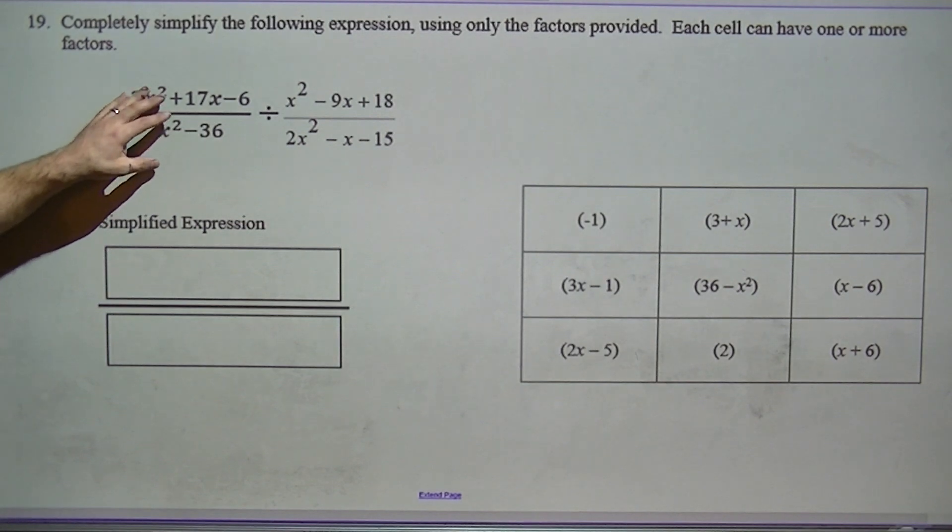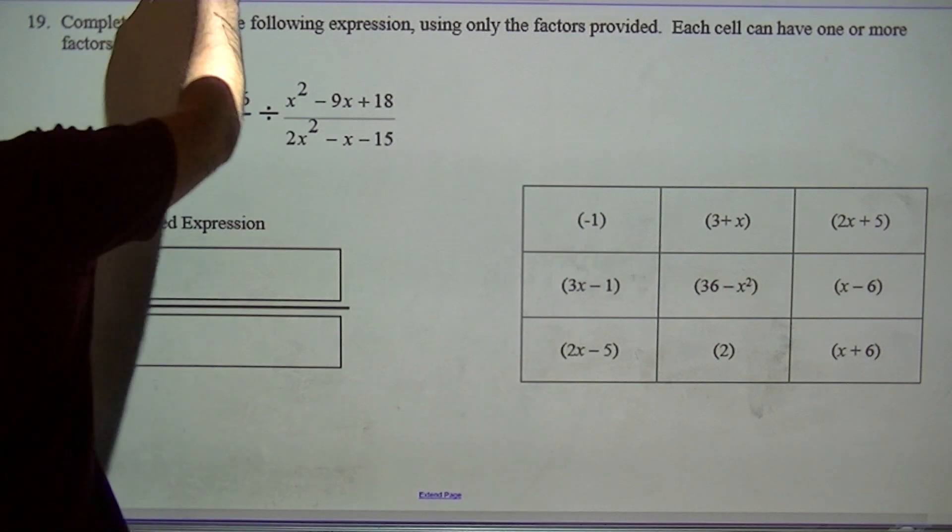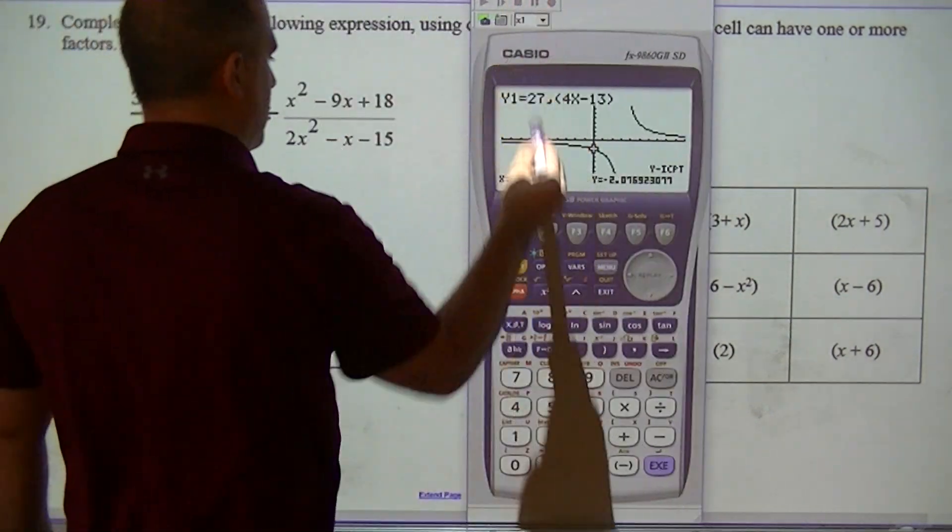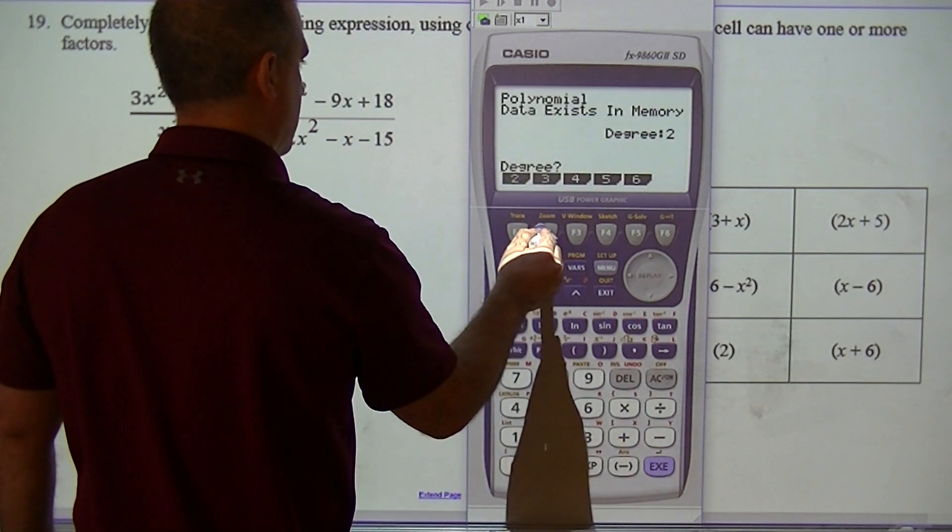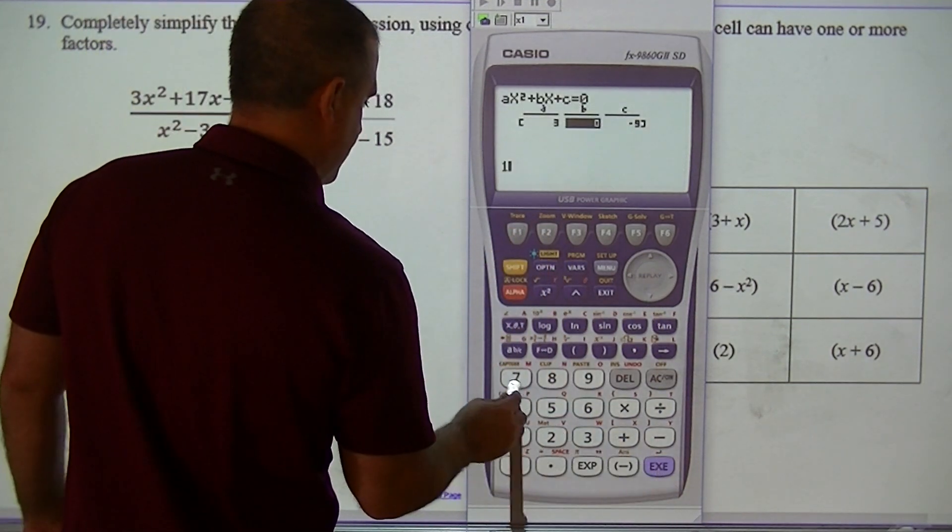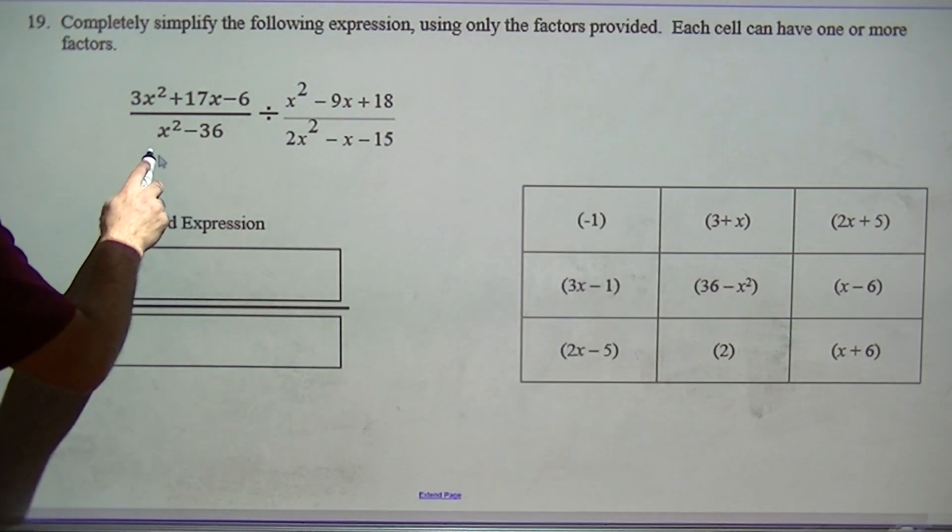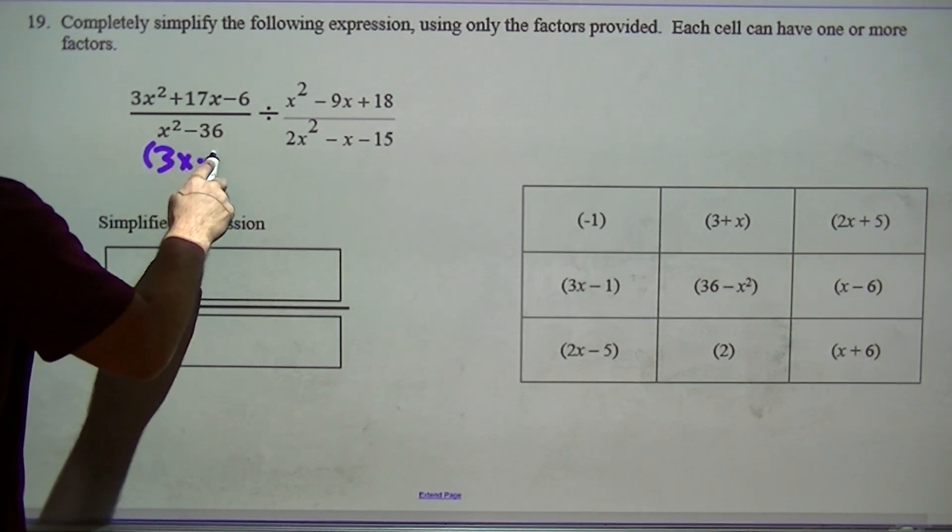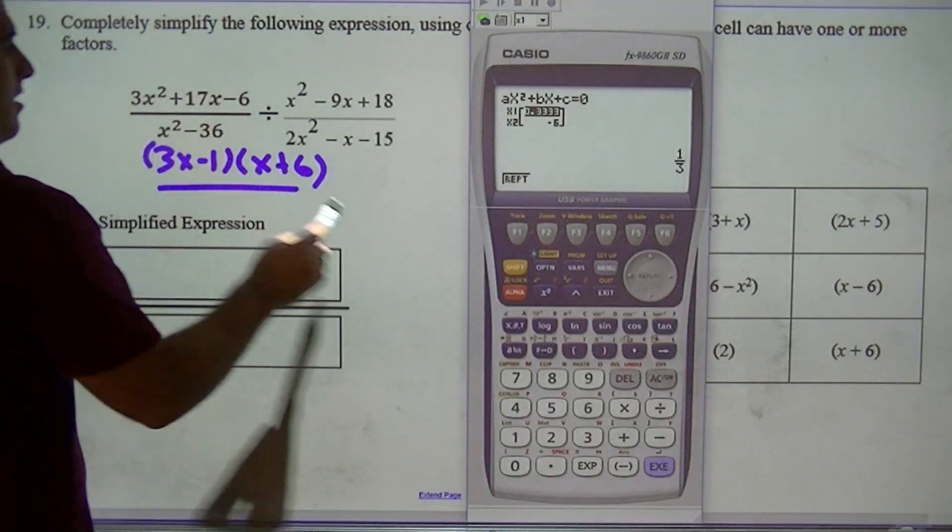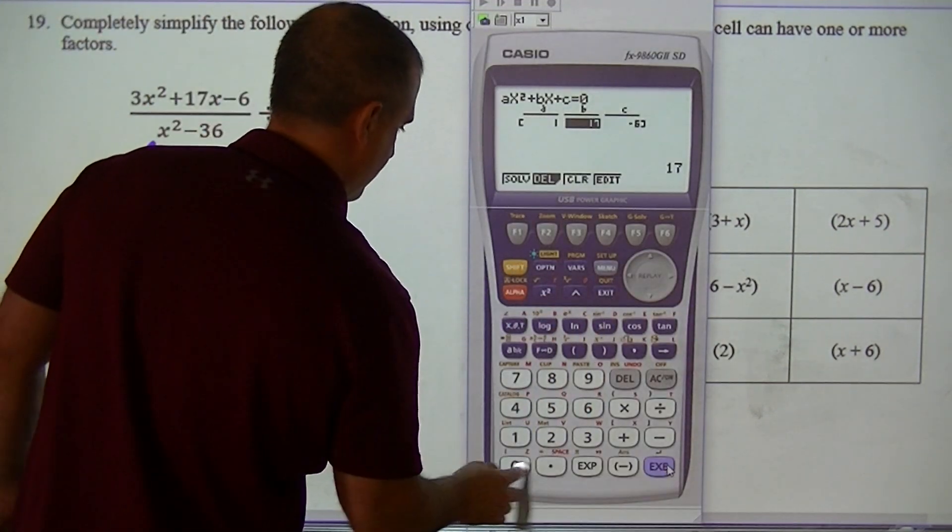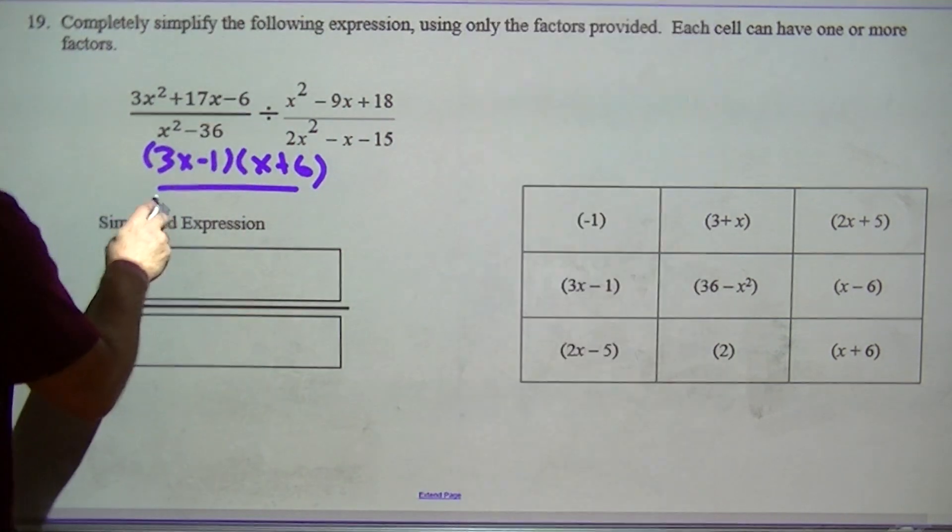Moving on. What I want to do is I want to use equal to factor everything. If I have a GCF, I'll get to what you do with those. So I'm going to use equal. So 3, 17, negative 6. So that would be 3x minus 1 and x plus 6. Here I would use equal as well. x minus 6, x plus 6.